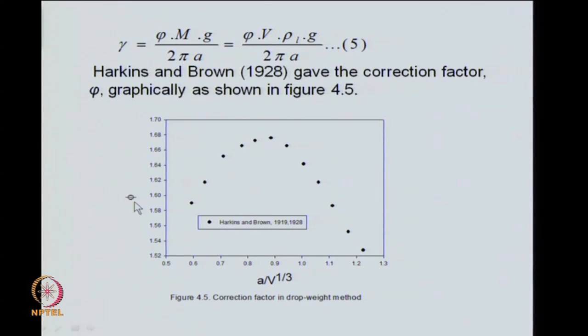In this plot you see the correction factor phi represented as a function of the tip radius divided by volume of drop to the power 1 by 3. This is dimensionless and the value for A by V to the power 1 by 3 spans 0.5 to about 1.25 and these have been obtained by Harkins and Brown way back in 1919-1928 and one could take these as authentic correction factors.